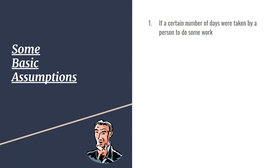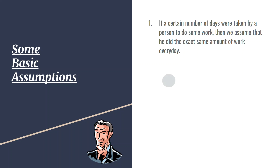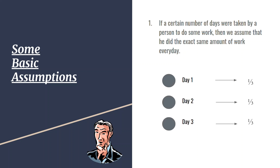Now there are some basic assumptions. If a certain number of days were taken by a person to do some work, then we assume that he did the exact same amount of work every day. For example, consider that a person took three days to complete a work — therefore he did one-third of the work every single day.